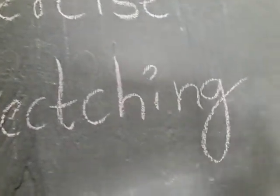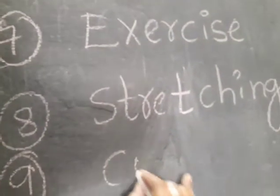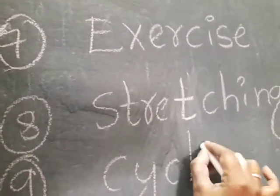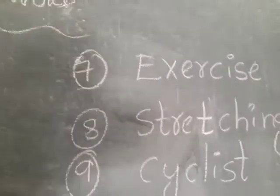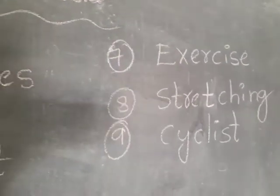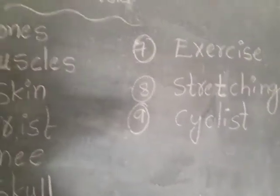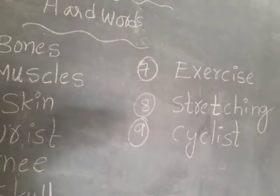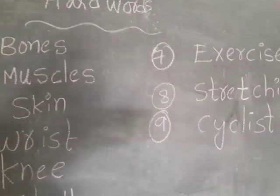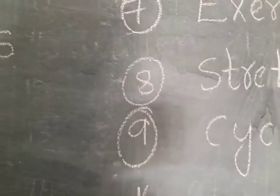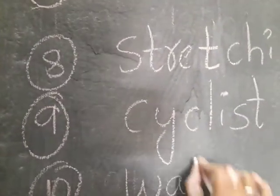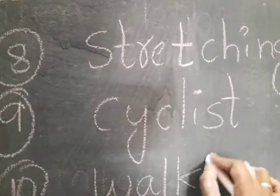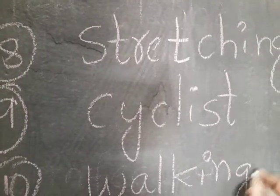Ninth one: cyclist. Cyclist. Tenth one: walking. W-A-L-K-I-N-G. Walking.